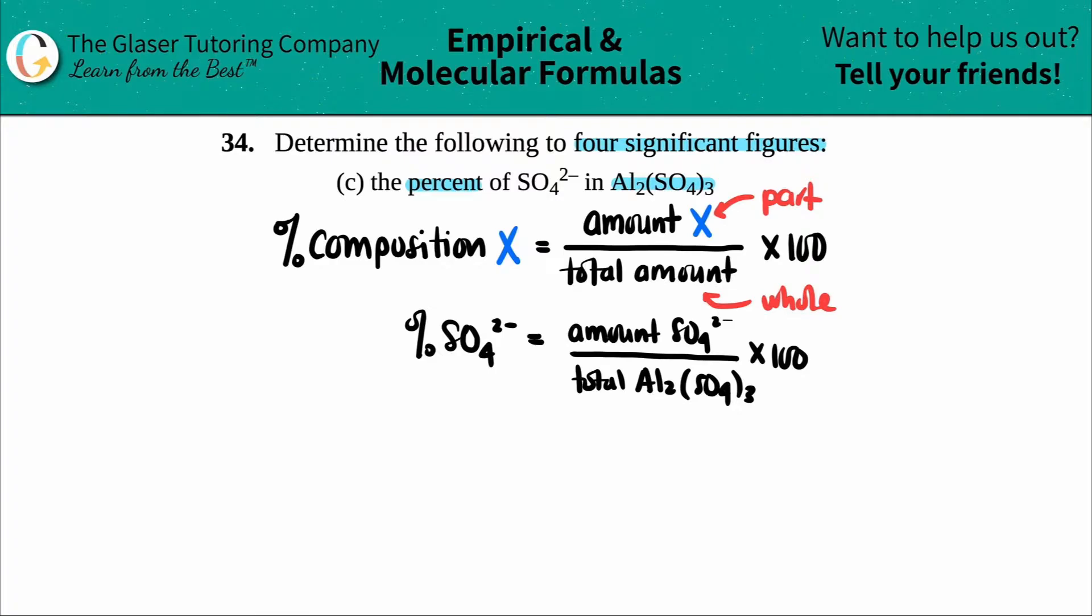We're going to do a little trick, but we still have to find the total molar mass. I have Al₂(SO₄)₃. Since they're only asking for the percent of sulfate, I'm going to do this differently. Usually I do the individual elements, break it down to aluminum, sulfur, and oxygen. However, they're asking for sulfate.